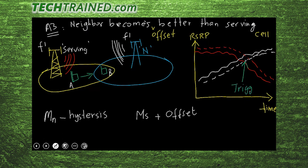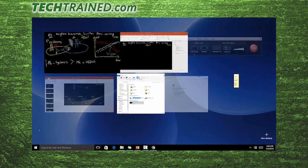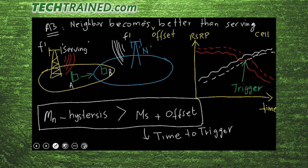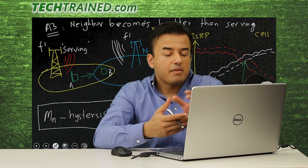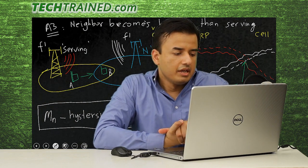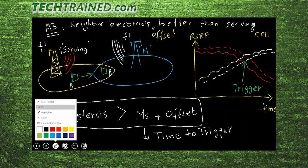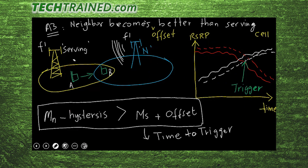The timer may be called 'time-to-trigger' or named differently by different vendors. The neighboring cell is still stronger than the serving cell, so this equation condition holds. If this equation remains true for the entire time-to-trigger duration, then at the expiry of this timer the UE concludes that Event A3 has taken place and sends a measurement report to the serving cell.